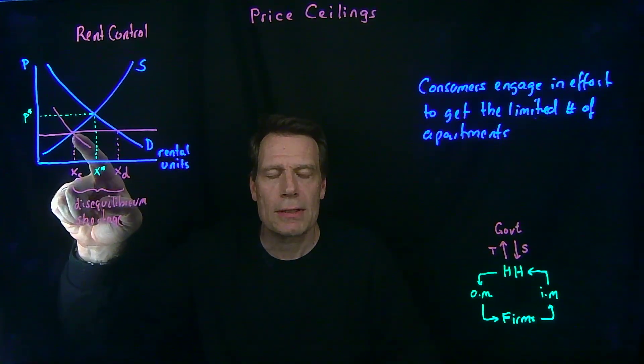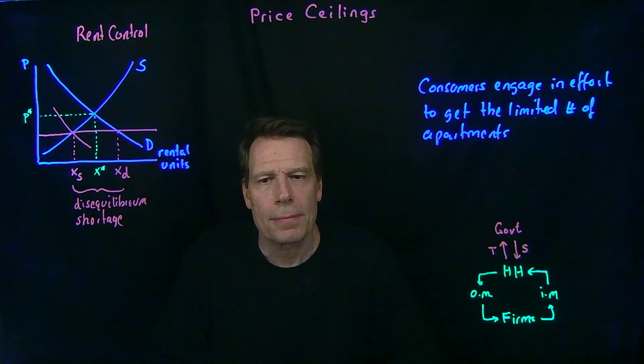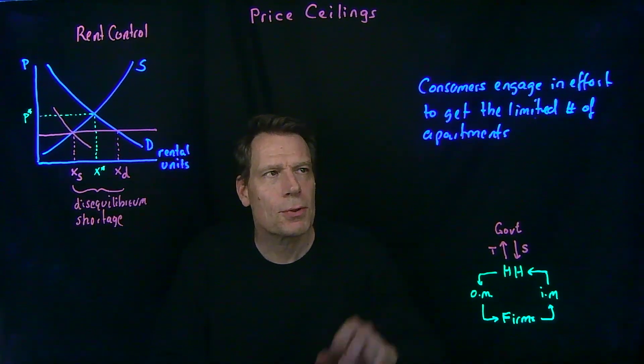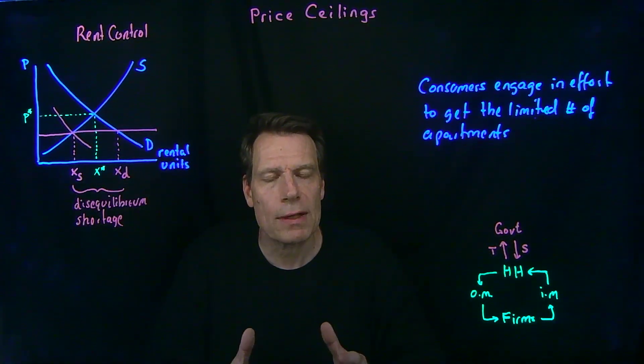Once the demand curve sits here, then this is in fact an equilibrium price. The price ceiling becomes the equilibrium price because consumer-induced effort has lowered the demand for those rental units.